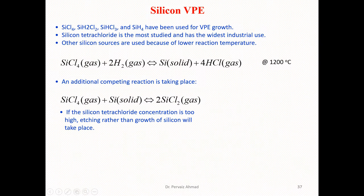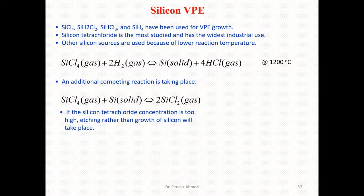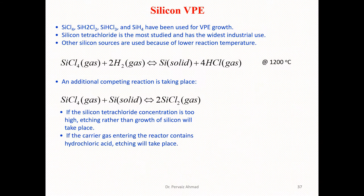These reactions can run in both directions. If the silicon tetrachloride concentration is too high, etching rather than growth of silicon will take place. So when running the reactions, we must monitor the concentration of silicon tetrachloride carefully — if it is too high, we will get etching instead of silicon growth.